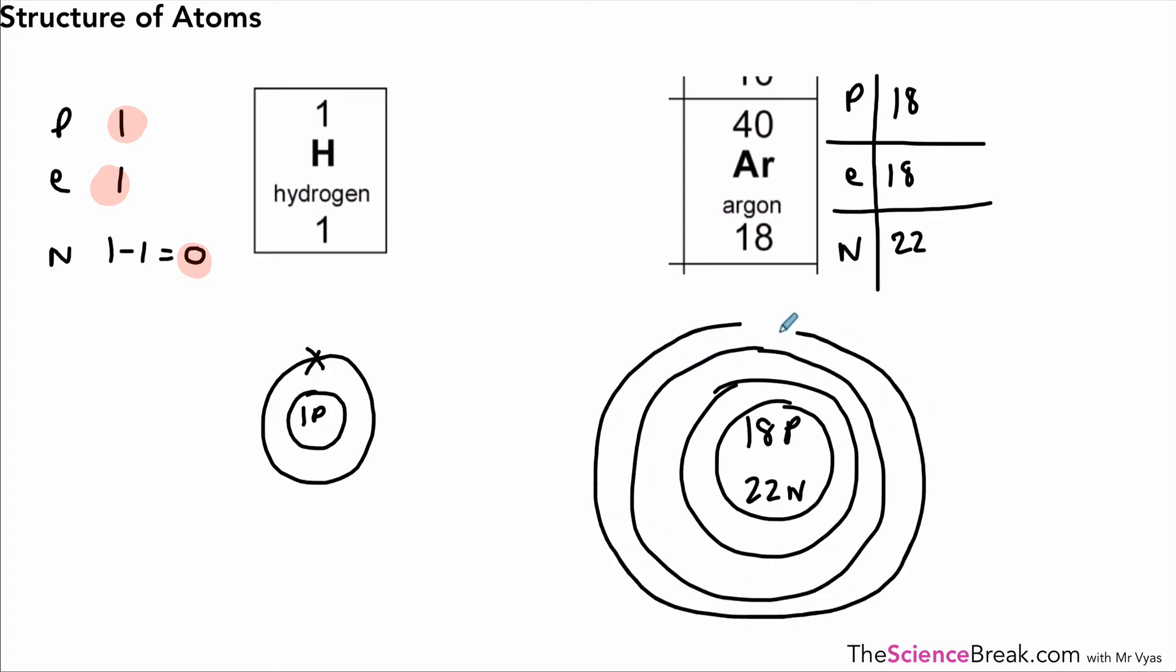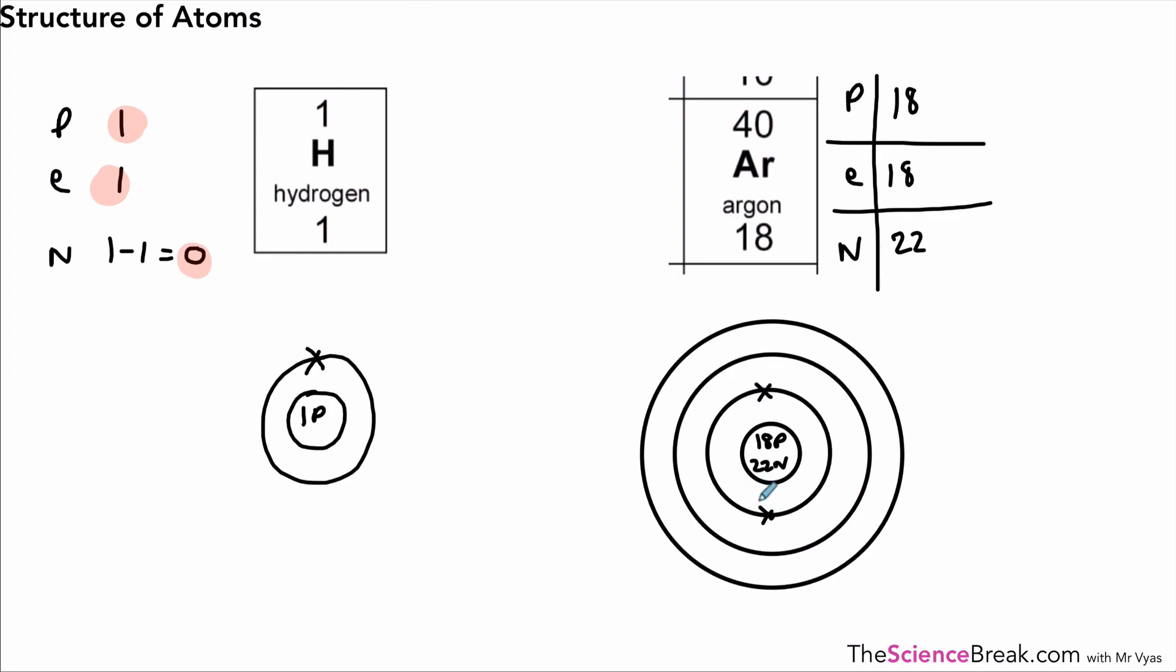Let's wave a magic wand and tidy that up. There we go, so we've got 18 protons and 22 neutrons in the nucleus, and then we can add our electrons: 2 and 8 makes 10, then another 8 in the final shell—that gives us 18.